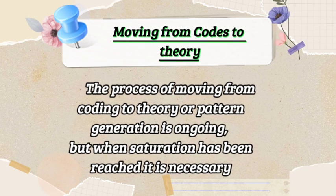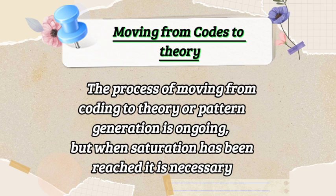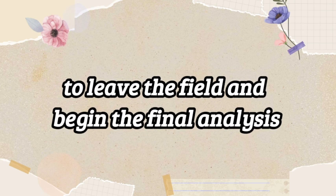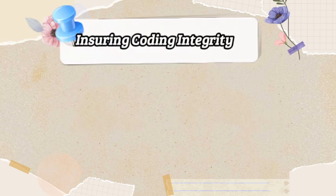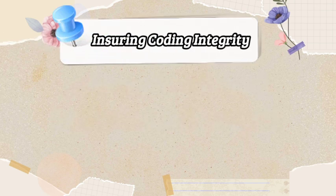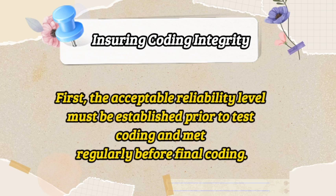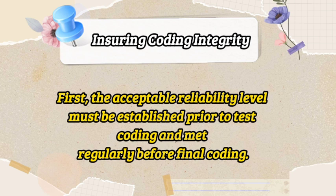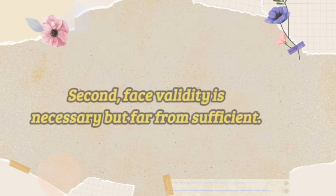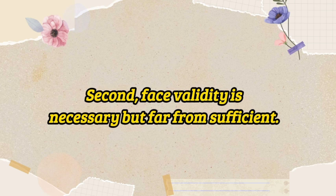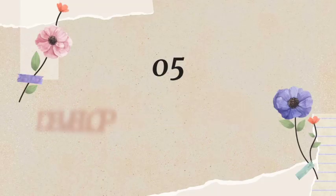Moving from codes to theory: the process of moving from coding to theory or pattern generation is ongoing, but when saturation has been reached it is necessary to leave the field and begin the final analysis. Ensuring coding integrity: three techniques help ensure the integrity of the work. First, the acceptable reliability level must be established prior to test coding and met regularly before final coding. Second, face validity is necessary but far from sufficient.